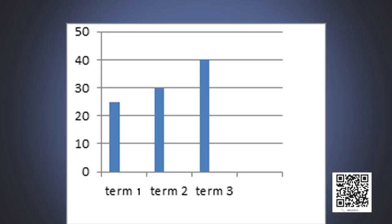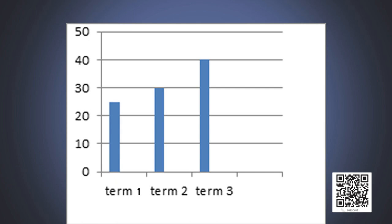Here, look at this graph. This graph represents Anu's marks in three terminal examinations. By looking at this graph, we can say that Anu's marks in third terminal examination is the highest and in the first terminal examination it is the lowest. What we are doing here? We are comparing Anu's performance by looking at those bars. So a graph which is used to show comparison among categories is called a bar graph.